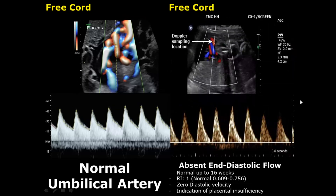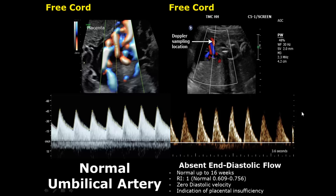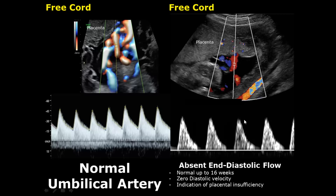In absent end diastolic flow, the EDV is 0 — the diastolic velocity is zero. If spectral analysis shows this pattern around 16 weeks, that is normal because at this stage the resistance is higher. But if this is seen in the third trimester or after 16 weeks, then it is a sign of placental insufficiency. The resistive index is 1. Here we have another case of absent end diastolic flow with zero diastolic velocity, also indicating placental insufficiency.